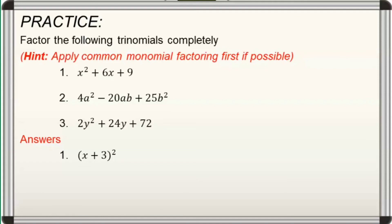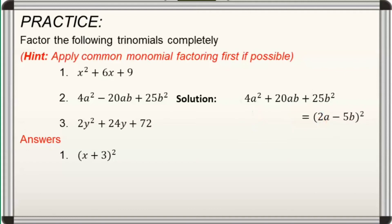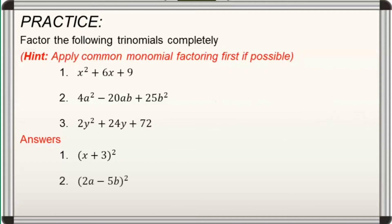For number 2, again, if we observe, it is a PST. So, using the square roots of the first and last terms as well as the sign of our middle term, we can now express it in the form quantity 2a minus 5b squared. Hence, the factored form of 4a squared minus 20ab plus 25b squared is the quantity 2a minus 5b squared.